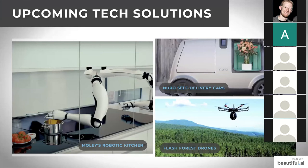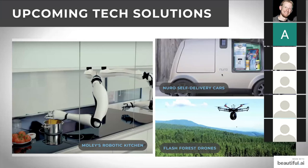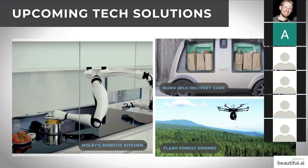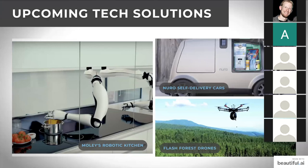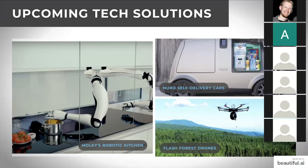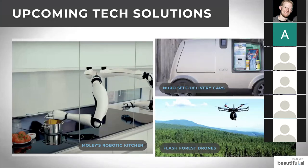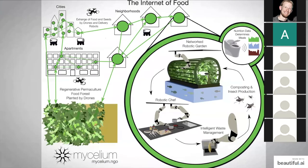Self-driving delivery cars are already being deployed in California to deliver produce and groceries in small modular autonomous vehicles. Flash Forest, a Canadian company, uses drones to drop seed pods onto eroded or desertified soil to reforest areas at scale. These are some of the exciting — and somewhat unsettling — trends happening right now.